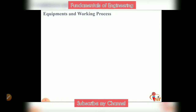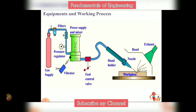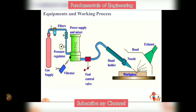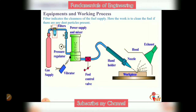Now let's look at the equipment used in abrasive jet machining and the working process. In this setup, gas — typically clean and dry compressed air, though carbon dioxide or nitrogen can also be used — is supplied from a container as part of the gas propulsion system. This gas is then passed through a filter where any dust particles present in the supply are removed.